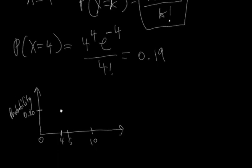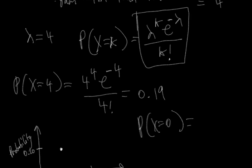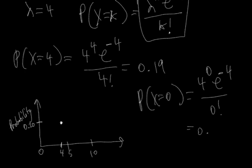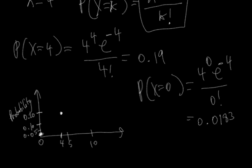Given that the average is 4, you'd expect a low probability of witnessing something like 0. The probability of x equals 0: everywhere we have lambda we put 4, and where we see k we put 0. So we get 4 raised to the 0, times e raised to the minus 4, over 0 factorial. This comes out to 0.0183. We're correct that there's a low probability of seeing 0 if the average is 4.